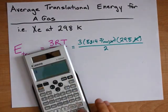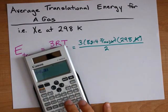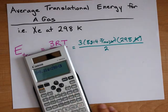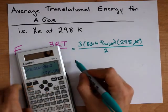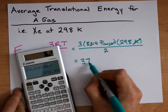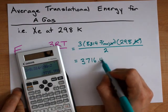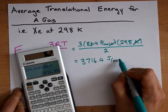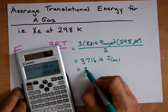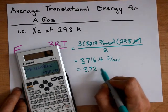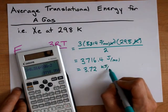So 3 times 8.314 times 298 divided by 2 gives me 3,716.4 joules per mole. That works out to 3.72 kilojoules per mole.